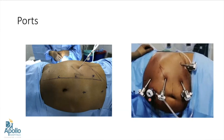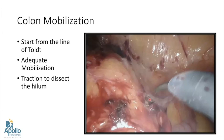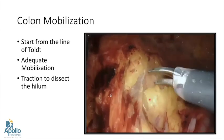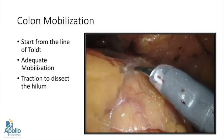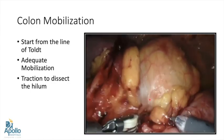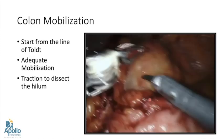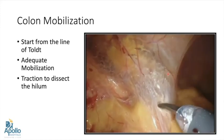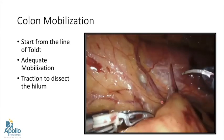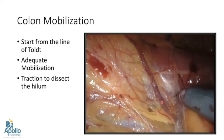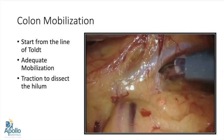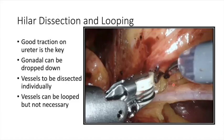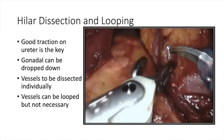The first step in partial nephrectomy is colon mobilization, starting from the line of Toldt. Adequate mobilization of the colon is a must — on the right side, mobilize from the hepatic flexure to the iliac vessels; on the left side, from the spleen to the iliac vessels, so the spleen falls open like a book. Traction on the bowel opens up the plane and makes dissection much easier. We can then lift the lower pole fat to identify and demarcate the ureter.